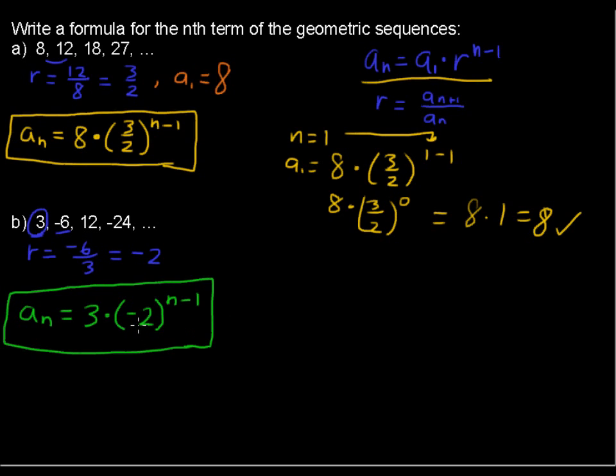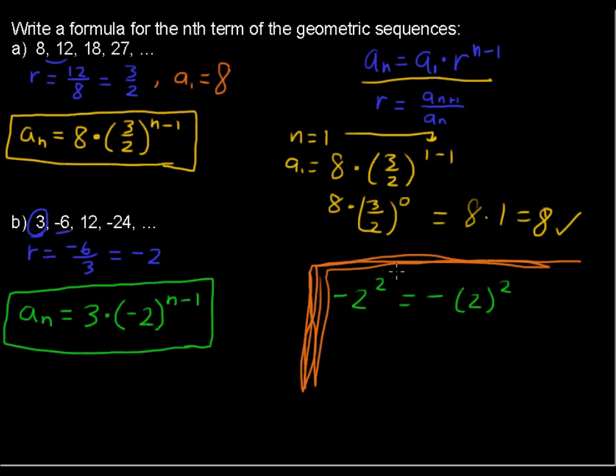Now, I said it's very important that this negative 2 is in parentheses. And the reason is because if you just have something like negative 2 squared, that equals the opposite of 2 squared. This is a separate explanation here. And that would be negative 4.